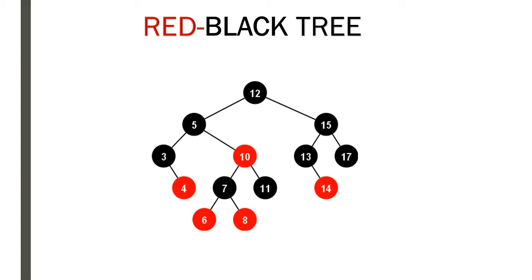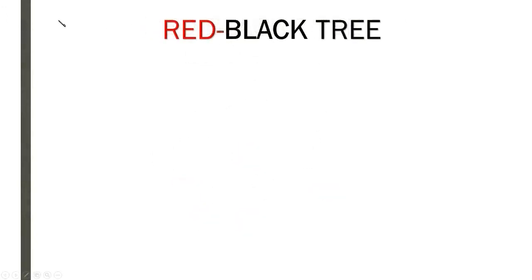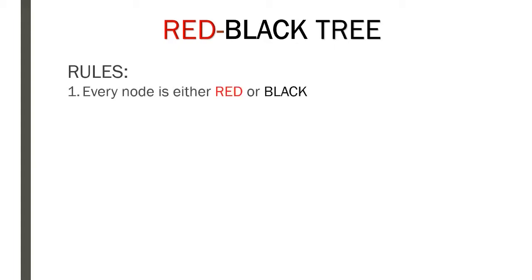Properties are like a set of rules that make it a red-black tree. If any of those rules are violated, it's not a valid red-black tree. So these rules are going to be our guide on determining what makes a red-black tree a red-black tree. The first rule: every node is either red or black.